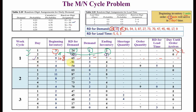Cycle one, day four starts with seven products — the ending inventory of day three. The random digit for demand is 81, corresponding to a demand of three. Seven minus three equals four, so the ending inventory is four. No shortage and no other entries for this day. Day five then starts with four products. The random digit for demand is 54, corresponding to a demand of two. Four minus two equals two products remaining at end of day.